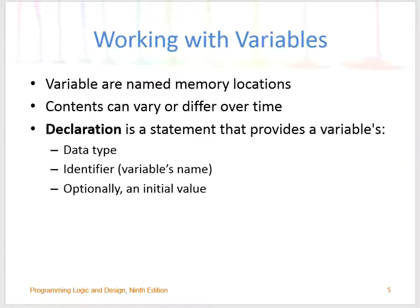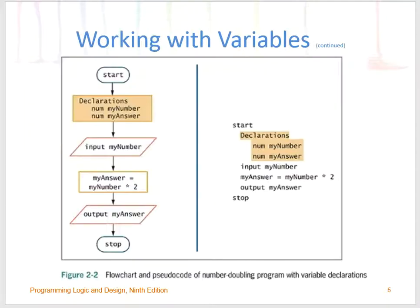Moving forward, we're going to talk about variables and how important they are. They are named memory locations whose contents can actually vary or differ over time. For example, I would like to use two variables: my number and my answer. The data type for this example is called num, which means it's a whole number. Depending on your book, Joyce Farrell categorizes whole numbers as num. You can also use int, which stands for integer, meaning you're working with whole numbers.